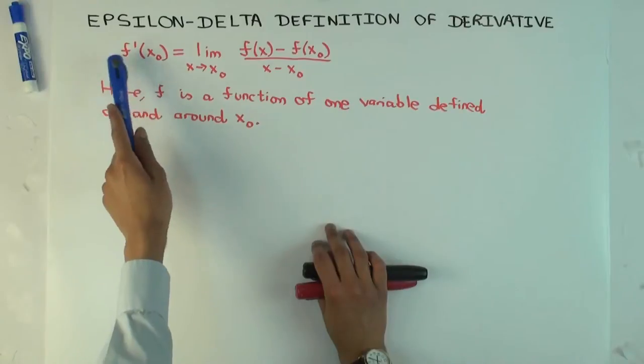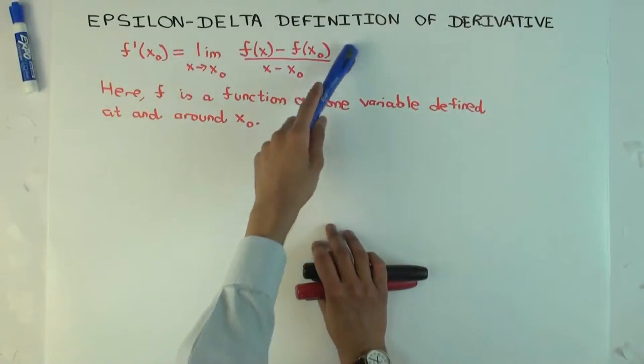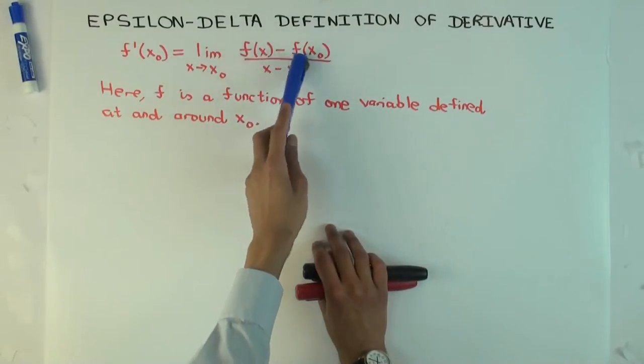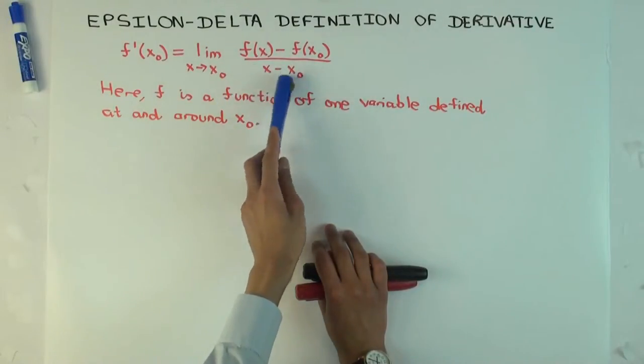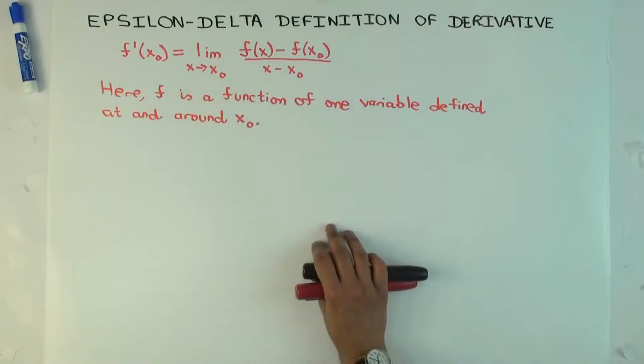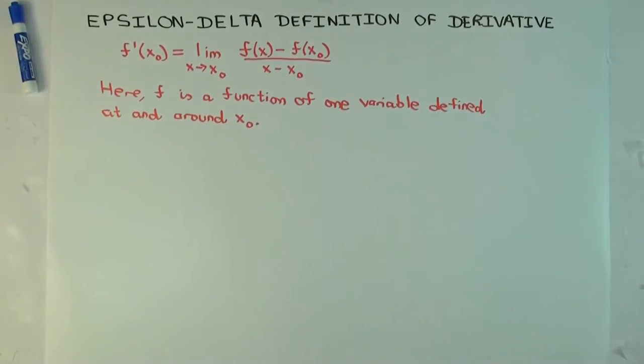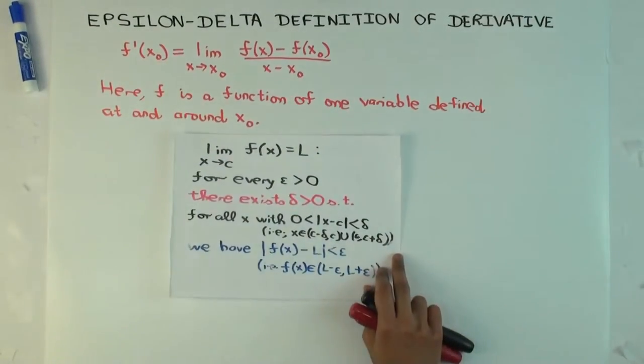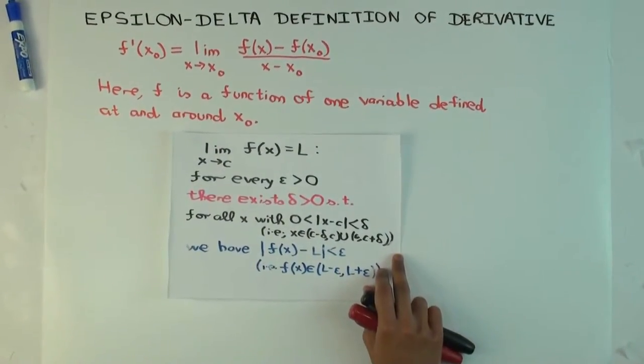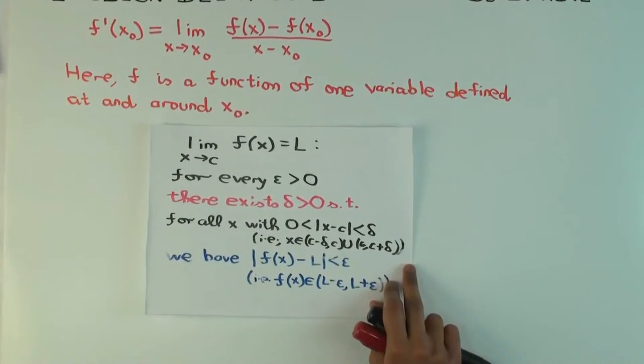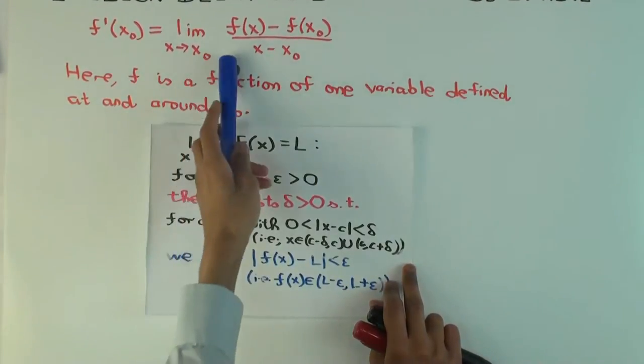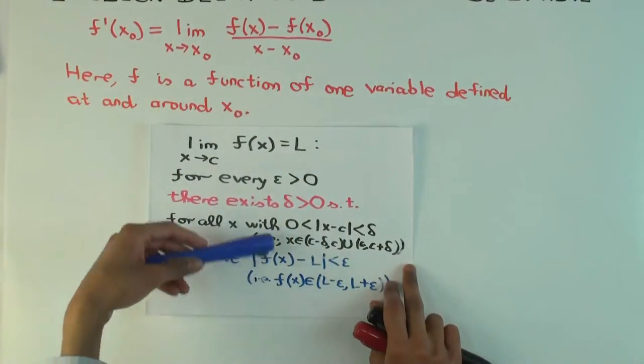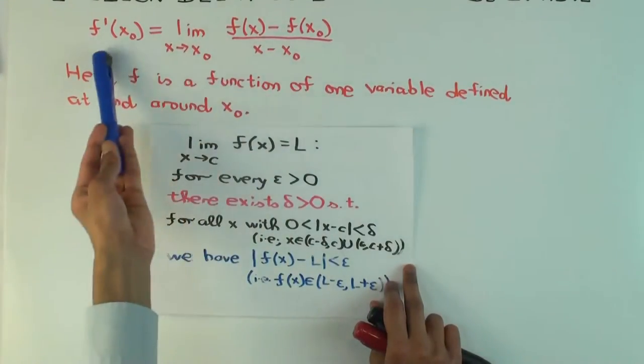And the derivative of f at x naught is defined as a limit of a difference quotient, difference of f values over the difference of x values. But we know and we remember fondly that limits, there's this epsilon-delta definition for a limit, right? So now the natural thing to do is, in order to make this definition more explicit, is to try to use this to get an epsilon-delta definition for the derivative.